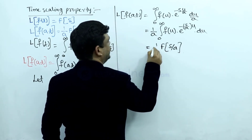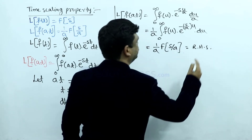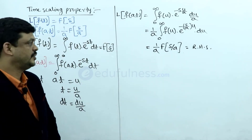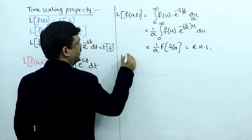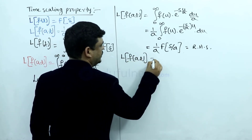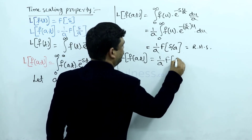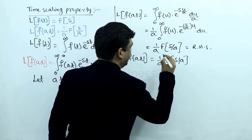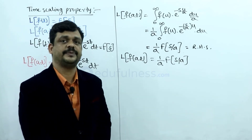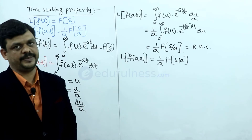The constant part remains as is, so this equals the right-hand side. Left-hand side equals right-hand side. Finally, we can write the statement: Laplace transform of f(at) is (1/a) · F(s/a). This property is called the time scaling property: whenever a constant multiplies in the time domain, we divide the same constant in the frequency domain.